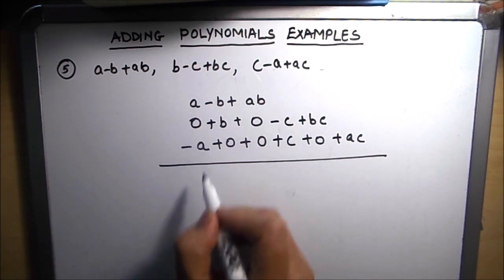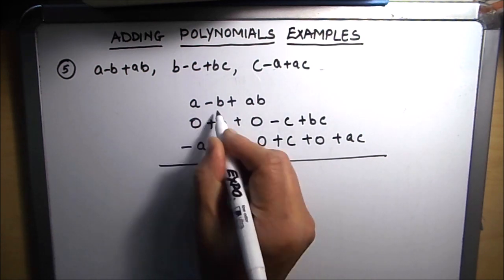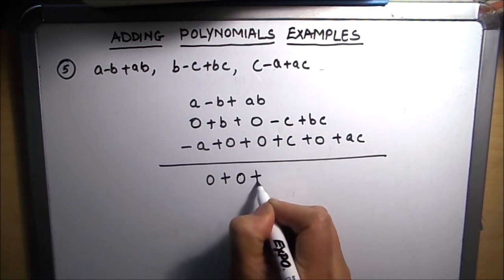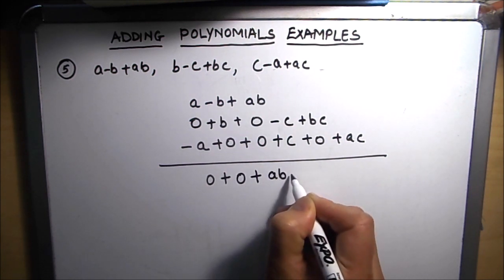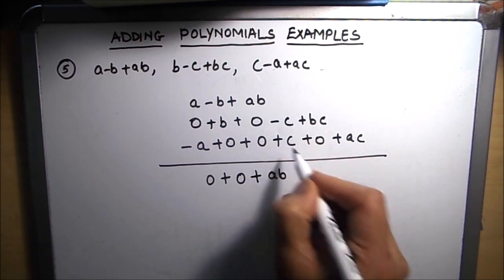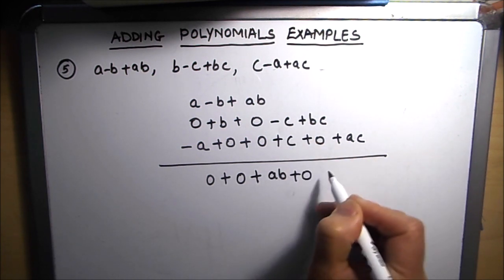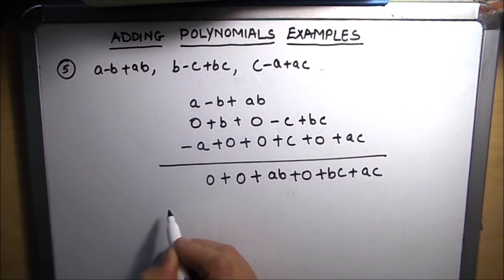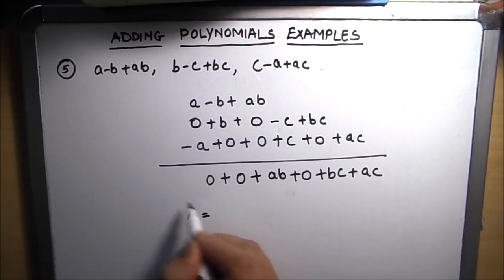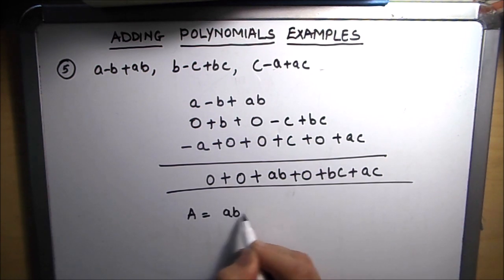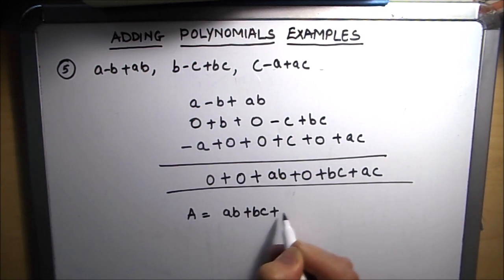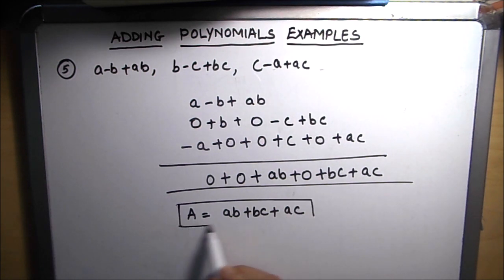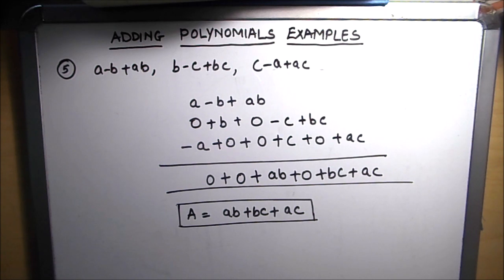Now adding: A minus A is 0. Minus B plus B is 0. Plus AB remains. Plus C minus C is 0. And BC plus AC remain. So our final answer is AB plus BC plus AC. I hope these examples helped you understand how to add polynomials. Thanks for watching.